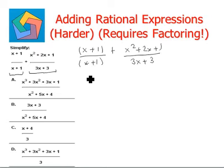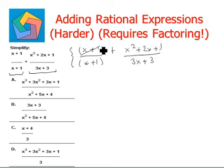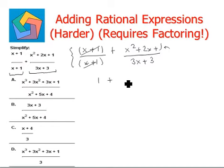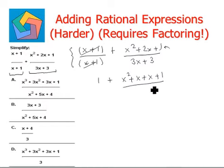In the first rational expression we have similar factors in the numerator and denominator — they can be cross-cancelled and we are left with 1, plus. The numerator of the second expression can be factored as x squared plus x plus x plus 1, and from the denominator we can pull out a 3 and we are left with x plus 1.